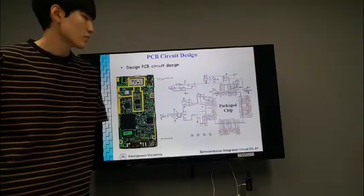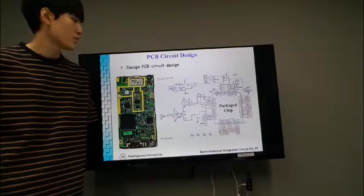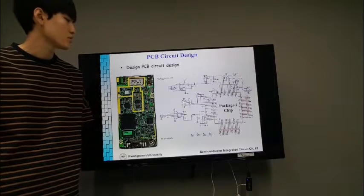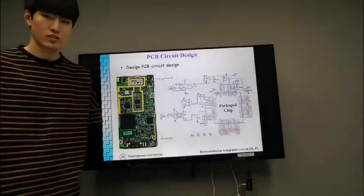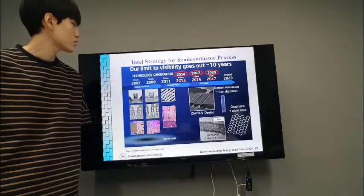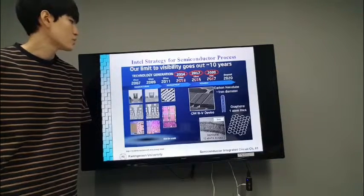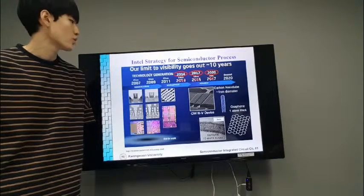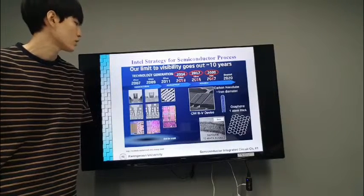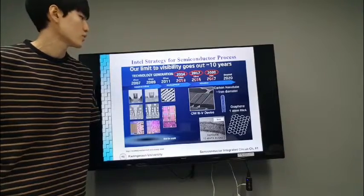These are PCB circuit board and schematic. As you can see, the package chip is connected to the various elements. Design the circuit is very complicated process. This picture shows the entire strategies for semiconductor. The feature size is becoming more smaller from 25nm to 7nm. And this process will continue.